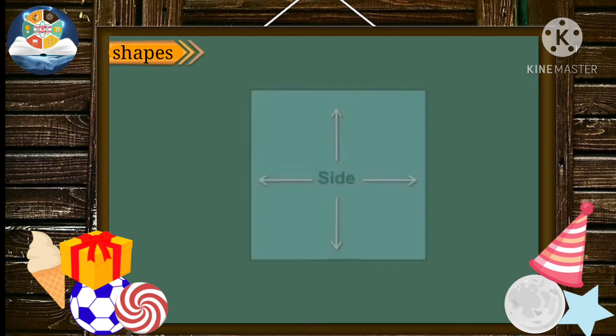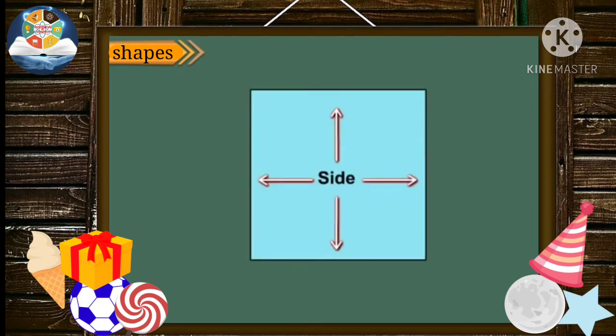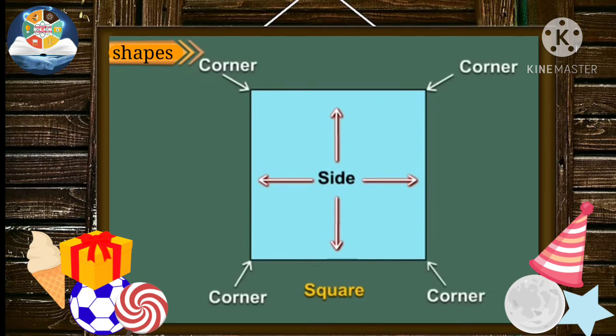This shape is made of four equal straight lines. It is a square. It has four corners.